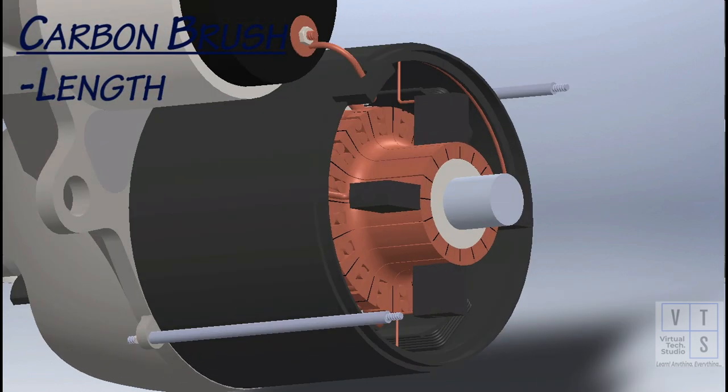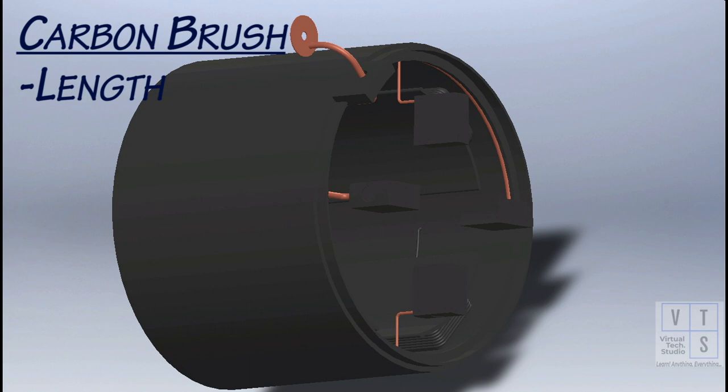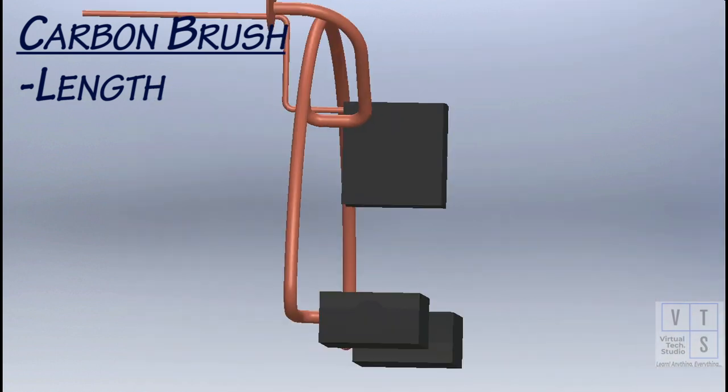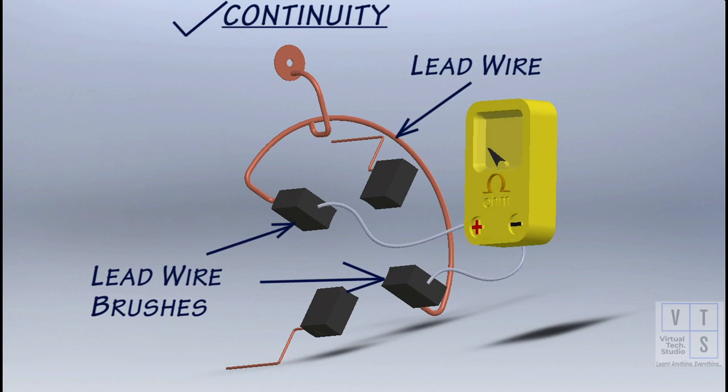Measure the length of carbon brushes and compare them with the manufacturer recommended value. Replace if they worn out too much. Check for the continuity between lead wire brushes. If no continuity exists, lead wire along with brushes should be replaced.